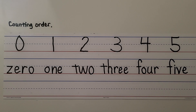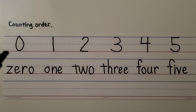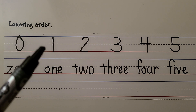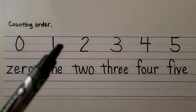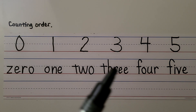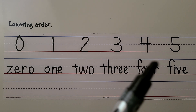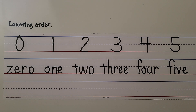Counting order is the order we count. We have zero — that means we don't have any. Then there's one, two, three, four, five. These numbers are in counting order.